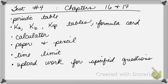You will need a periodic table for your test, of course. You will need the KA table, the KB table, and the KSP table. I recommend that you make yourself a formula card. Normally I would write the formulas on the board. You're probably familiar with most of the formulas for pH, POH, KA, and KB, but I would make a formula card to have that all in one place. You'll also need your calculator, paper, and pencil.